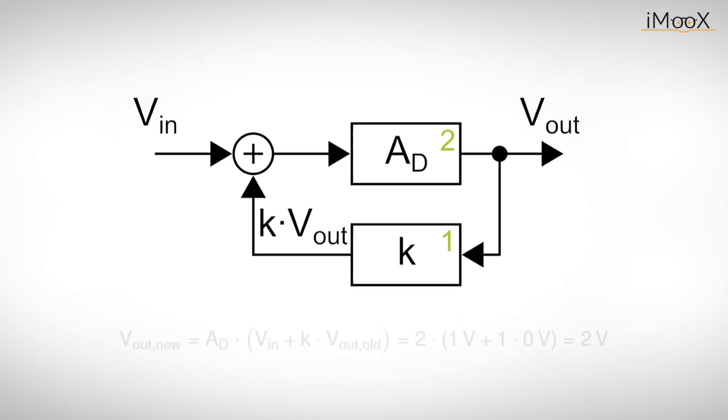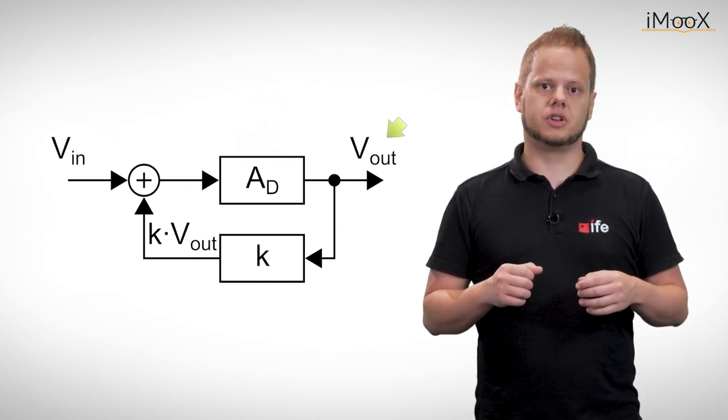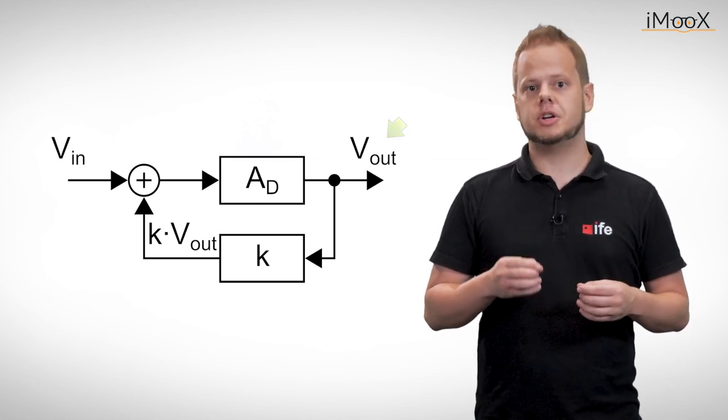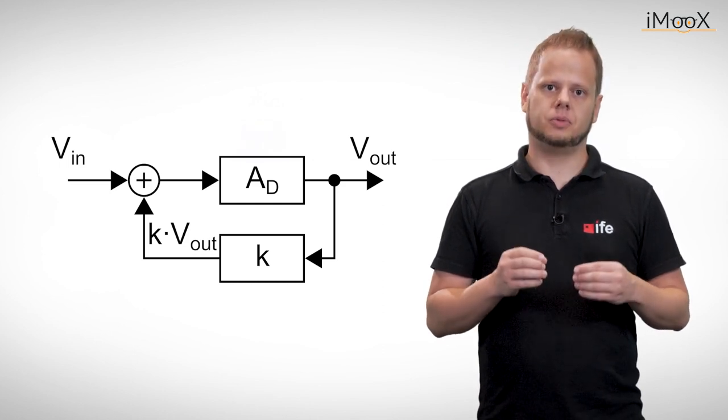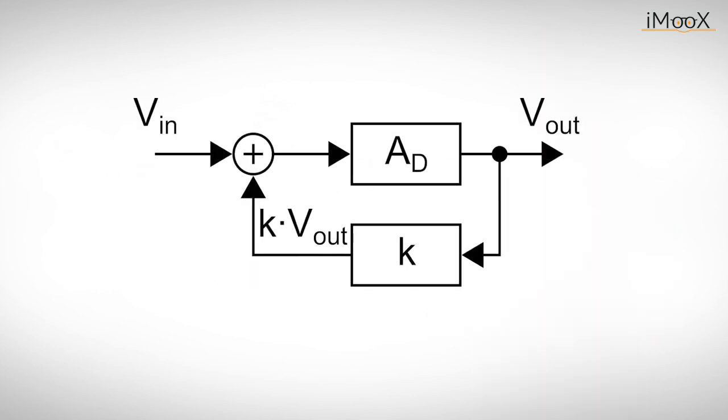This would be true even if we just apply a non-zero input voltage for a very short time. At the beginning this does not make much sense, as the output voltage would just skyrocket towards either plus or minus infinity. But operational amplifiers can only provide a limited output voltage. This means the output voltage only reaches a certain minimum and maximum value. Let us assume that our operational amplifier can provide plus minus 5 volts at its output and it is currently stuck at plus 5 volts.